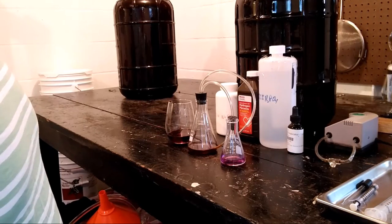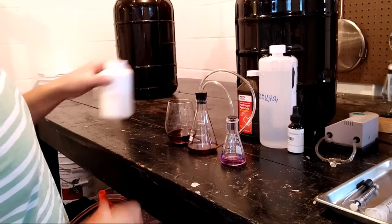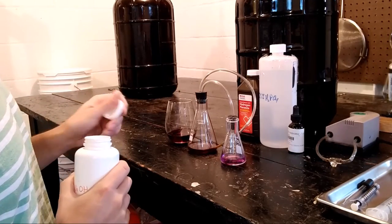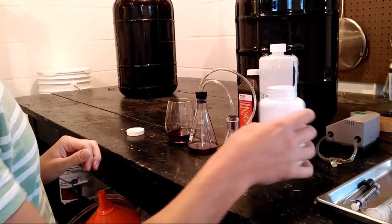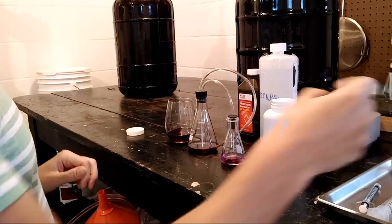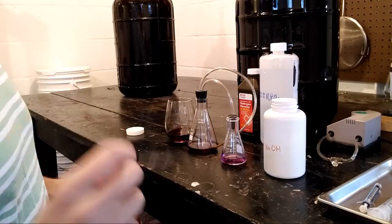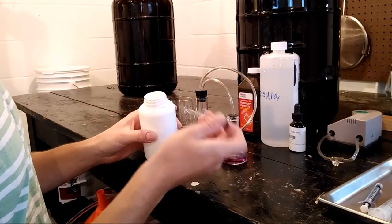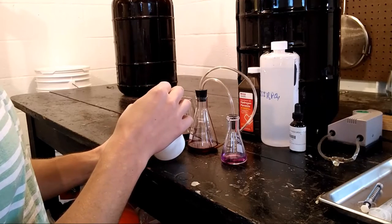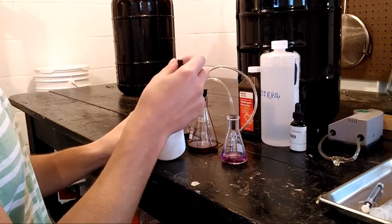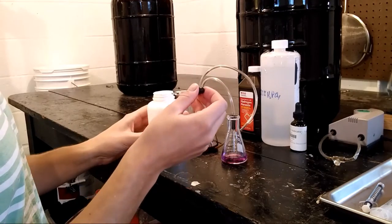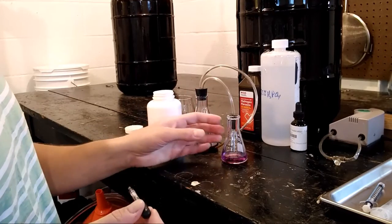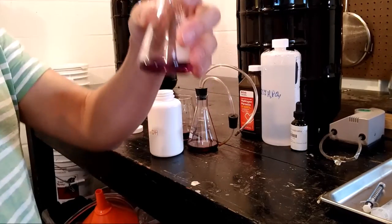Next we'll take our 0.01N sodium hydroxide and add that drop by drop with a separate little dropper. Add that drop by drop to our small container until the solution turns green. It doesn't really matter how many drops it takes at this point, you're just adding enough to turn it green.